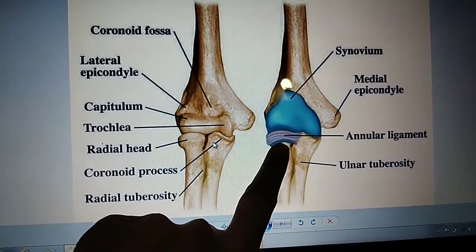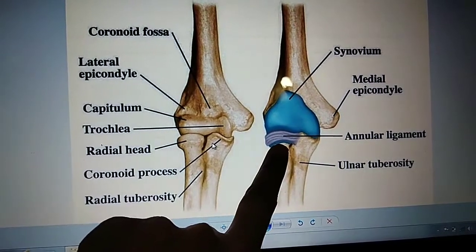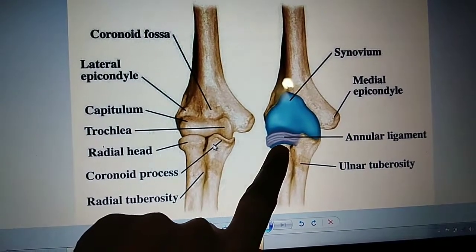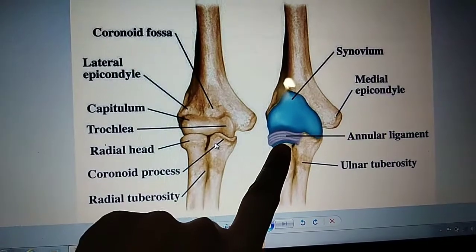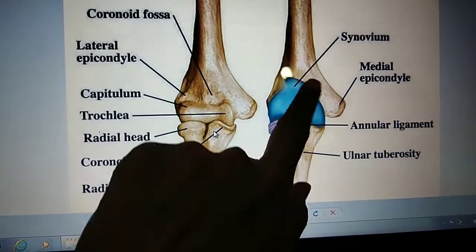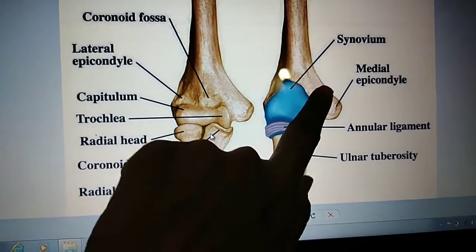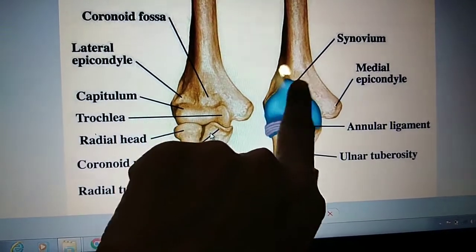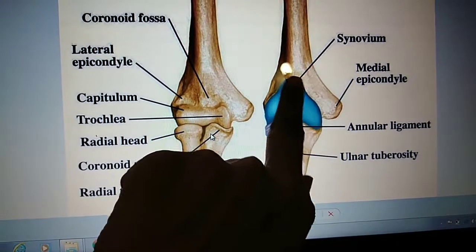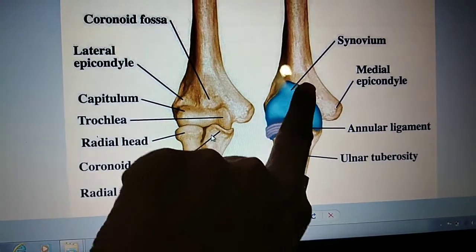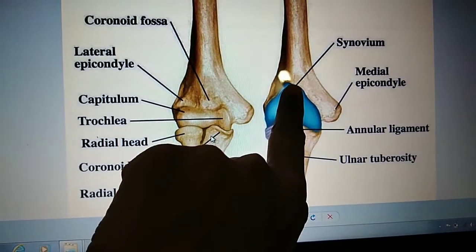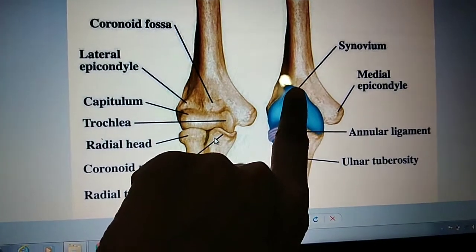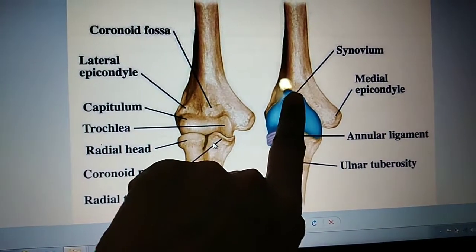In elbow dislocation, there is more vulnerability for nerve injury, particularly the ulnar nerve — ulnar nerve injury is the most common nerve injury associated with elbow dislocation. For supracondylar fractures specifically, the brachial artery and median nerve are the structures most at risk.